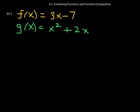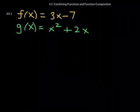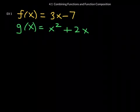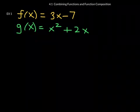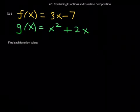If you notice, function f is a linear function. It's written in mx plus b form. The graph of function f would be a line with slope positive 3 and y-intercept negative 7. While function g is a quadratic function, so we know that its graph would be a parabola. A parabola, in this case, opening upward because the leading coefficient of this quadratic function is positive. So what we're going to do first to get us started is we are actually going to find a function value.